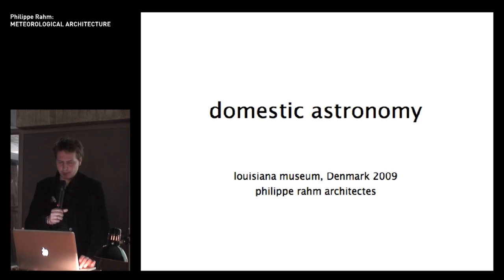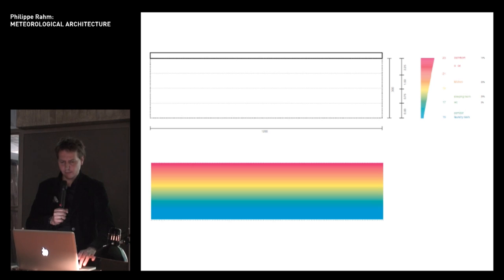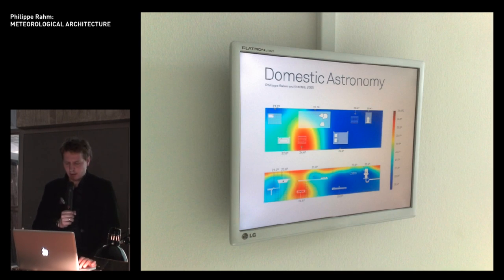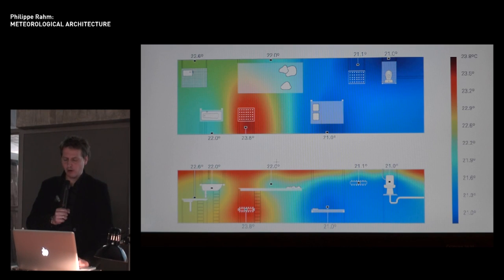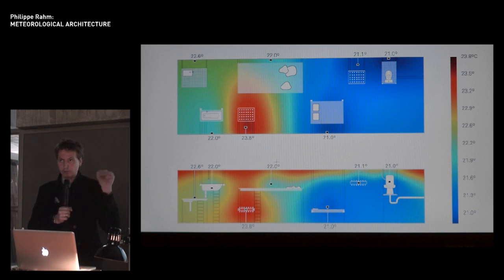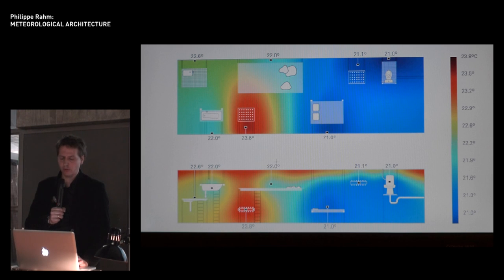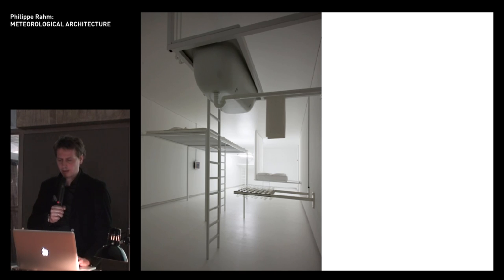I was invited to the Louisiana Museum near Copenhagen, where we realized the same concept — but only using warm air rising, without a full convective movement. We mapped the different temperatures in section and plan, and introduced functions at different heights linked to temperature: bathtub in the warmest atmospheric layer, bed down in the cooler zone — a contemporary apartment organized by the atmospheric layering of air.